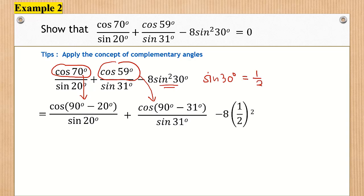Therefore, we are going to have minus 8 multiplied with 1 over 2 squared. Now we are going to apply the complementary angles here. We know that cosine of 90 degrees minus 20 degrees is equivalent to sine 20 degrees. So we are going to have sine 20 degrees divided by sine 20 degrees, which simplifies to 1.